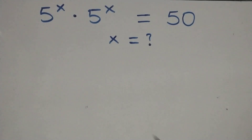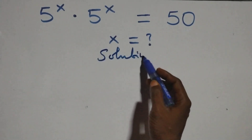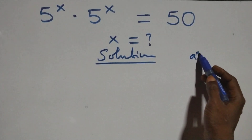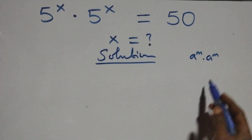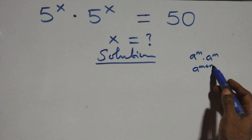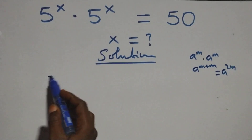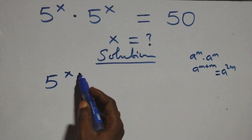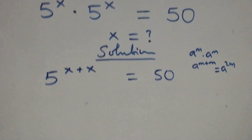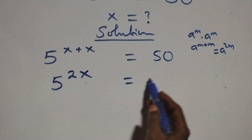Hello, you are welcome. How to solve this nice exponential equation. When we have a raised to power m times a raised to power m, this can be written as a raised to power m plus m, which is the same thing as a raised to power 2m. So here we have 5 raised to power x plus x equals to 50, which becomes 5 raised to power 2x equals to 50.